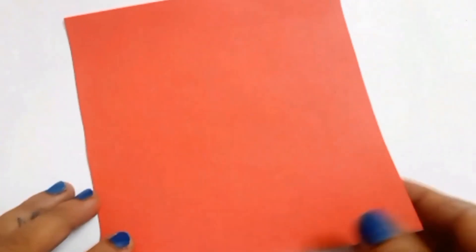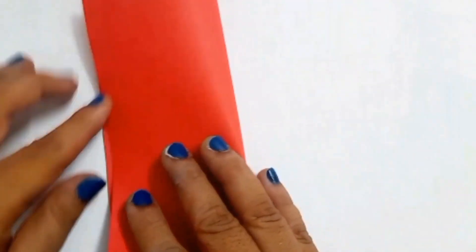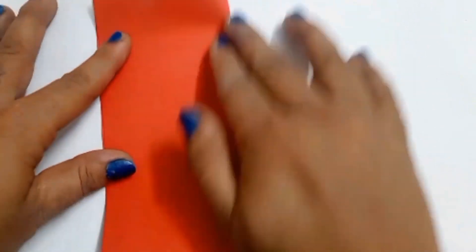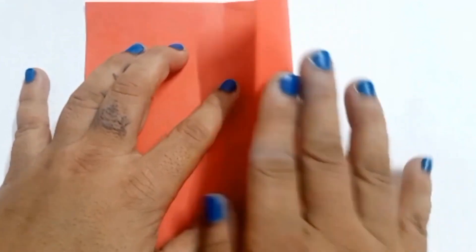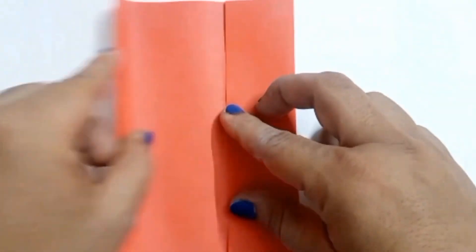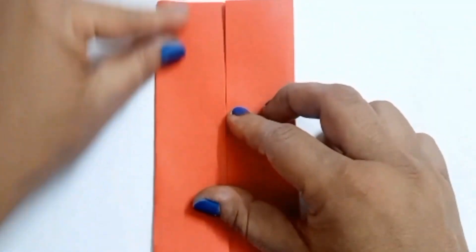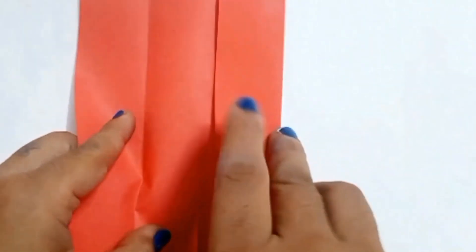Take a square shape sheet and fold it from right to left. Now open it and fold the right and the left edges to the middle. Unfold it. You will get these type of fold crease.